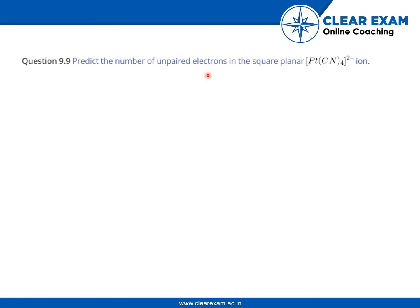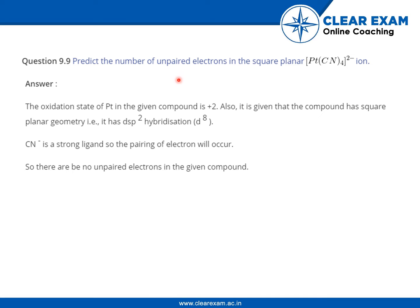The question is: predict the number of unpaired electrons in the square planar [Pt(CN)4]2- ion. The charge on the coordination compound is 2 minus, so you have to predict the number of unpaired electrons.